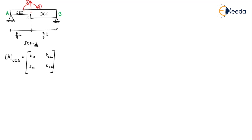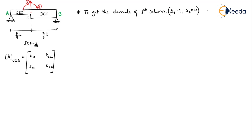Now let us one by one see how to develop this. Whenever you are developing a stiffness matrix, you have to do it column by column. First let us see how to get the elements of the first column. To get the elements of the first column, we have to apply displacement in the first coordinate equal to unity and all other coordinates we have to keep as 0. Here there are only 2 coordinates, so delta 1 equals 1 and delta 2 equals 0. So delta 1 is the rotation, because the first coordinate is a moment.